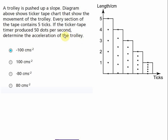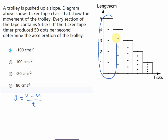The acceleration of the trolley can be determined by using the formula: a equals v minus u over t. We can find u and v easily from the table. We use the initial movement section to find our u.